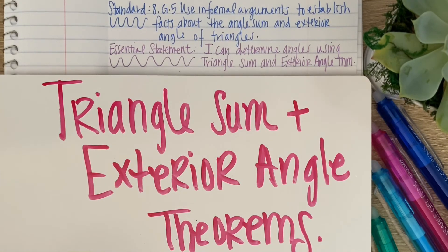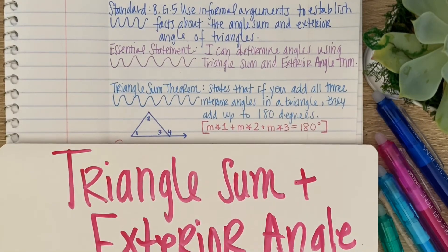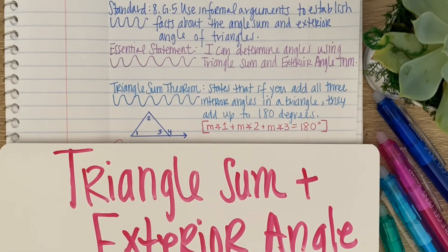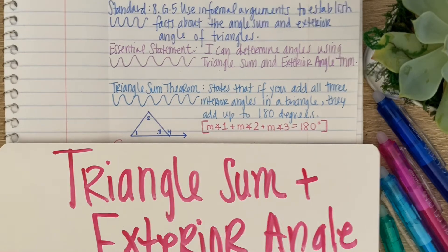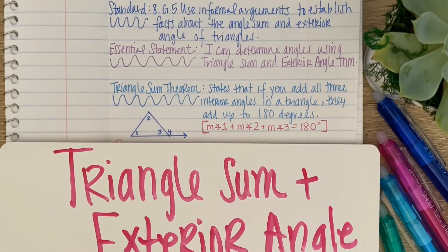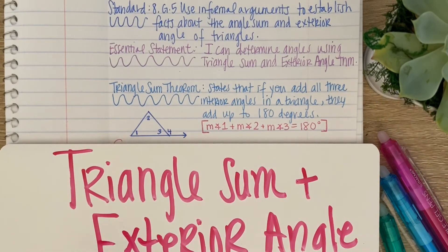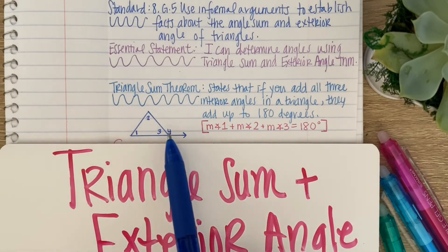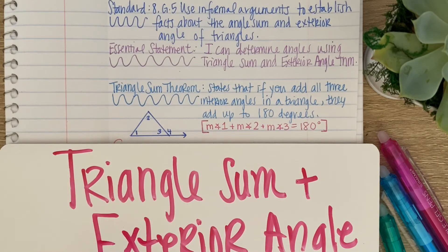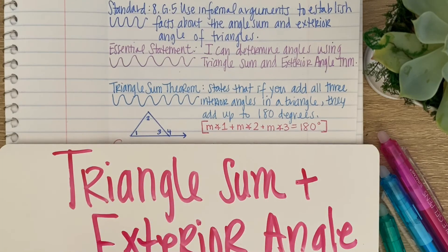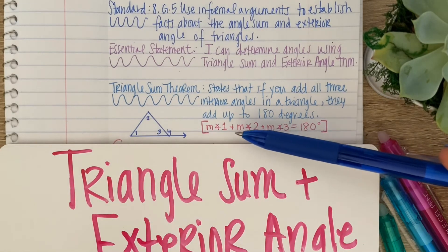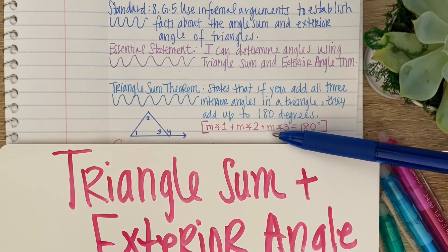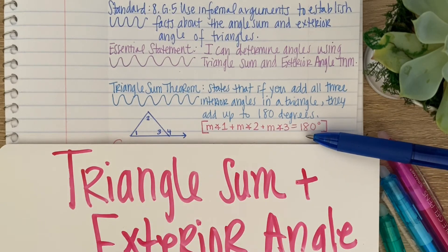We're going to go over a couple of definitions first. Here we have the triangle sum theorem. It states that if you add all three interior angles in a triangle, they add up to 180 degrees. Looking at this diagram, we have three inside angles — interior — and one outside angle, number four. Algebraically, the triangle sum theorem looks like this: the measure of angle one plus the measure of angle two plus the measure of angle three is equal to 180 degrees.